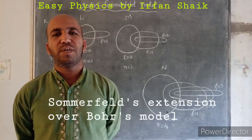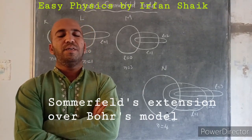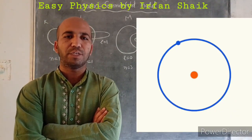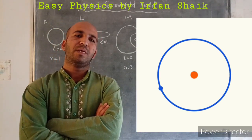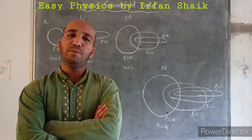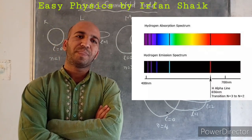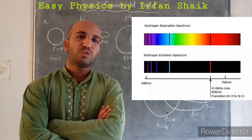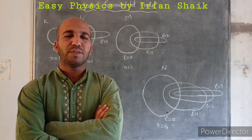In the last class we discussed the Bohr atomic model, which is applicable for atoms having only one electron — basically the hydrogen atom. We also learned the defect of Bohr's atomic model: it was unable to explain why spectral lines split into so many lines in the presence of high-resolution spectroscopy. This is the main defect of Bohr's atomic model.